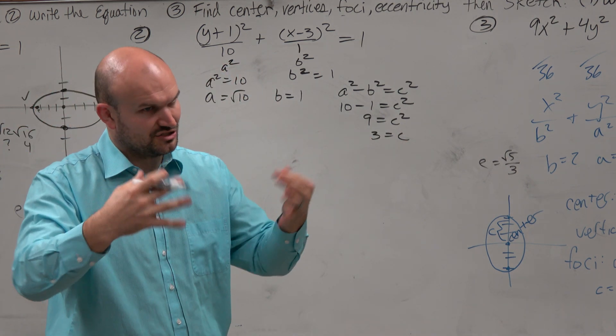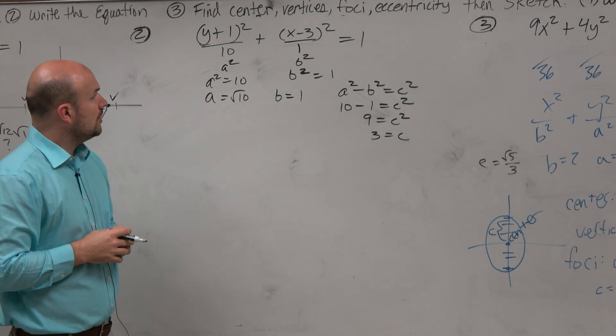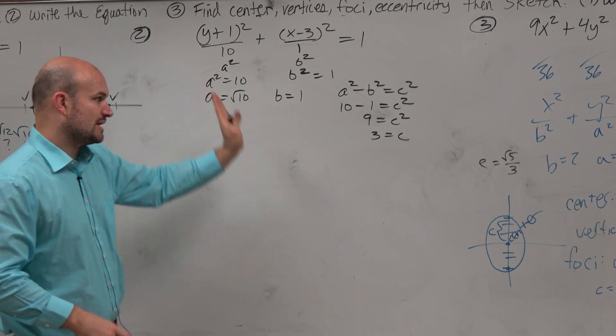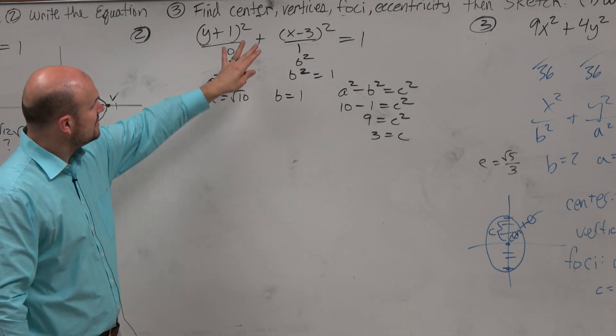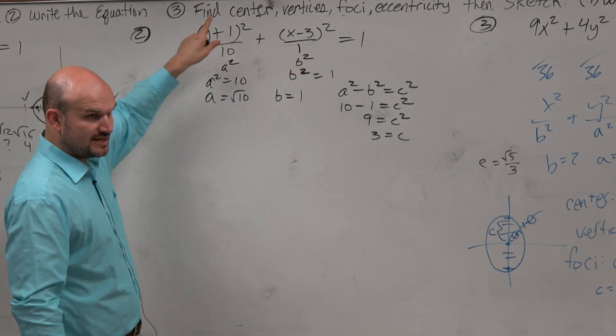Remember guys, we're not doing the plus or minus because it's just the distance, so it's just absolute value distance. So we know that a squared is under the y, so we know we're going to have a vertical major axis. Remember, h is always with the x, k is always with the y.